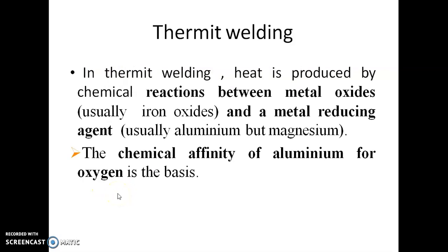Thermite welding: heat is produced by chemical reactions between metal oxides — that is iron oxide (Fe3O4) — and a metal reducing agent, alumina. The metal powders used are aluminium and iron oxide (Fe3O4). The chemical affinity of aluminium for oxygen is the basis for thermite welding.